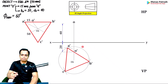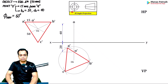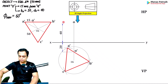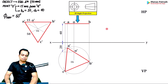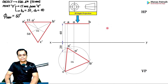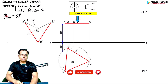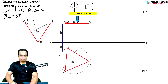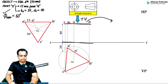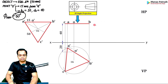Now create the top view by looking at the front view from above. In step one, all points are at the same level, giving a straight-line top view parallel to VP. In step two, we go for surface inclination: incline the top view at 60 degrees. The surface is currently parallel to VP, and now we tilt the top view at this angle.